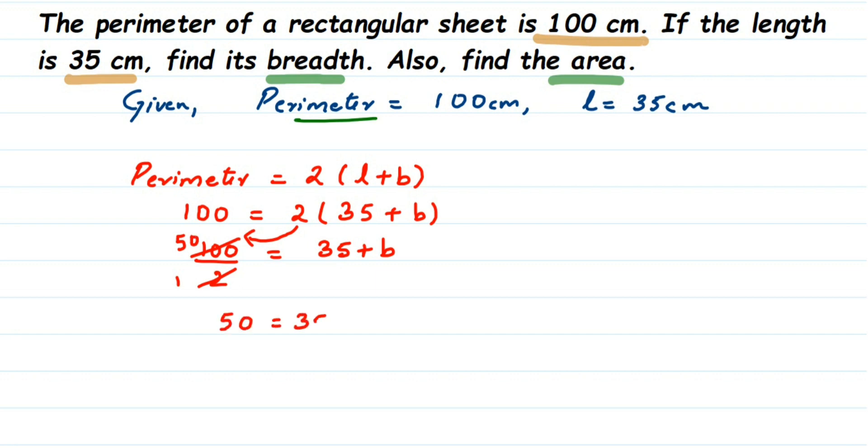So 50 equals 35 plus B. Now we want only B value, so send this 35 to the other side. When it goes to the other side the sign will change - it will become minus. So 50 minus 35 equals B. Subtract them: 50 minus 35 is 15.